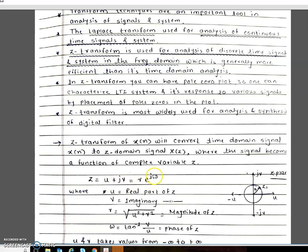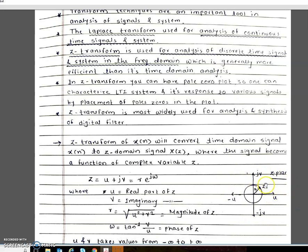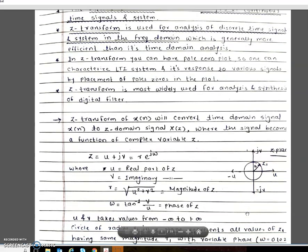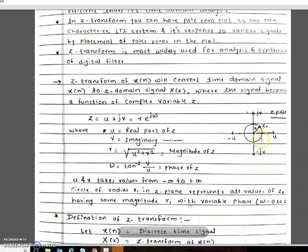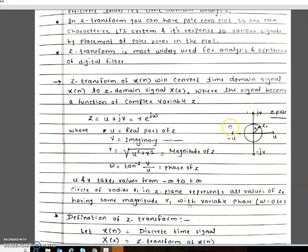The complex variable Z has the value U + jV, where U is the real part. It is denoted by R·e^(jω), where R defines the radius of the circle represented on the Z-plane. The Z-plane has a real part and an imaginary part, and both may vary from minus infinity to plus infinity. The circle of radius R1 in the Z-plane represents all values of Z having the same magnitude R1 with variable phase, where ω varies from 0 to 2π.